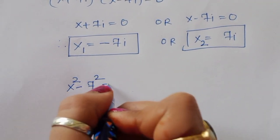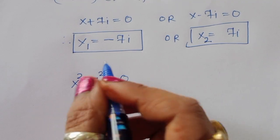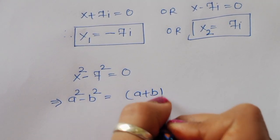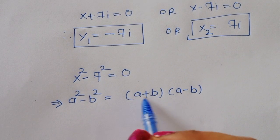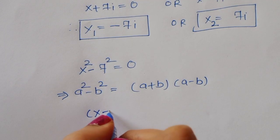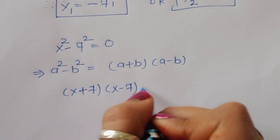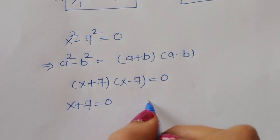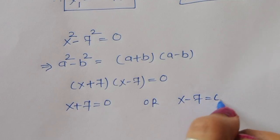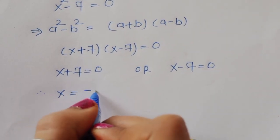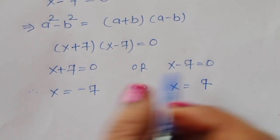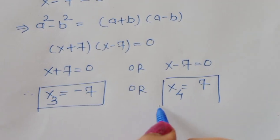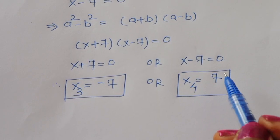For the second equation, x² - 7² = 0, we apply the formula a² - b² = (a + b)(a - b), giving (x + 7)(x - 7) = 0. Therefore x = -7 or x = 7, which are x₃ and x₄ respectively.